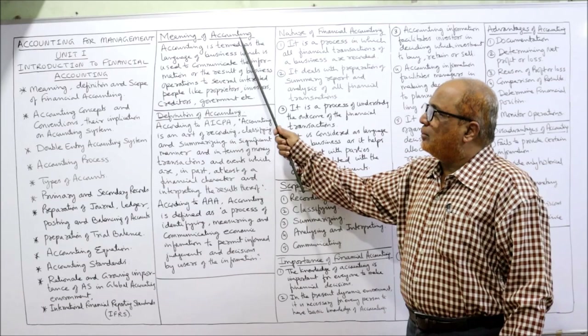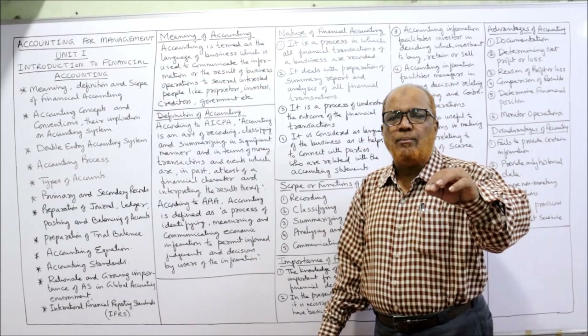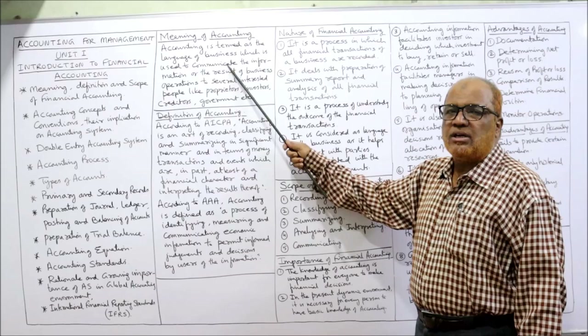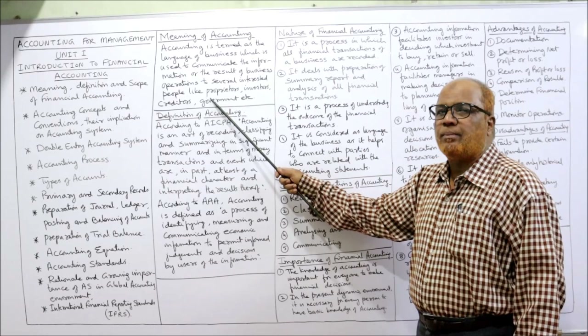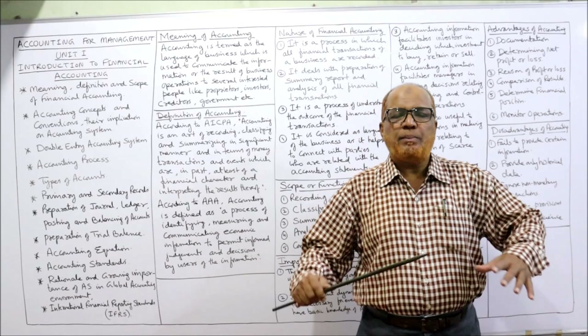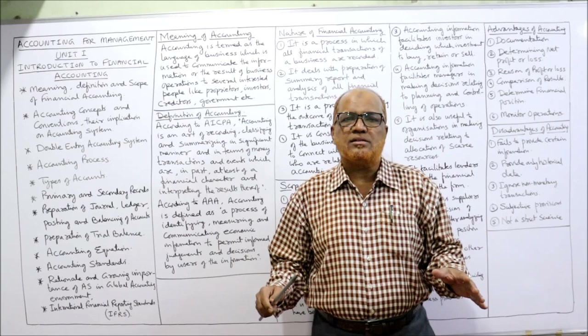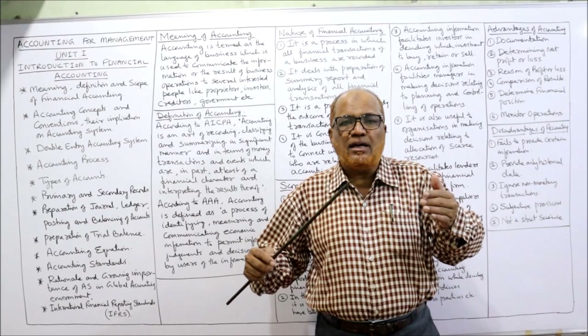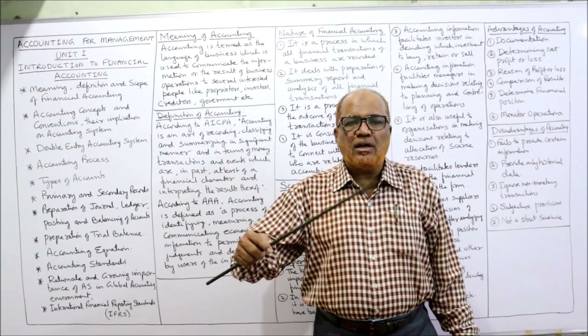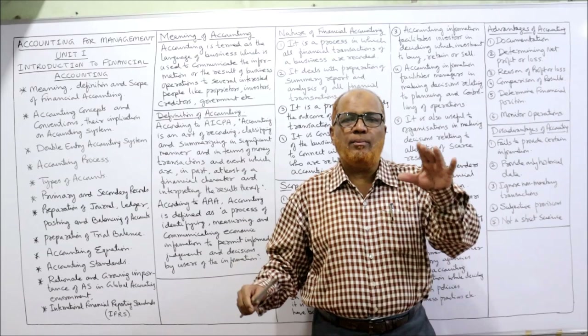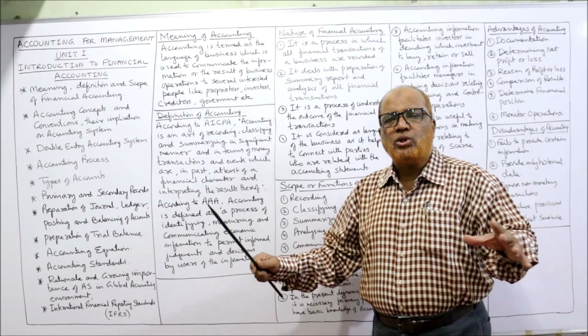Accounting is termed the language of business because it communicates the result of operations to several interested parties — proprietors, investors, creditors, government, etc. These people are called stakeholders — employees, investors, government, suppliers, bankers — all are stakeholders having a stake in the business, interested in its financial information. Communication is done through accounting.